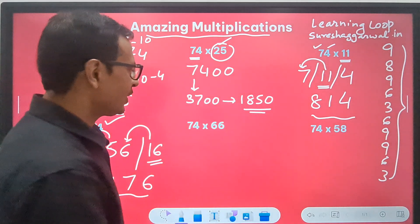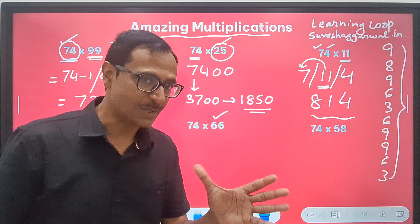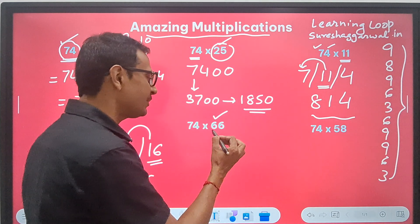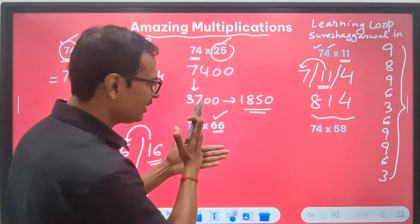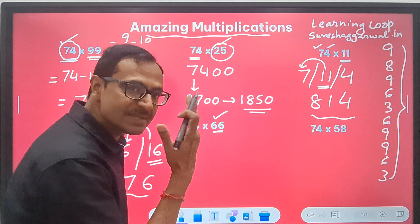Likewise, if you are multiplying it by a special number 66. Now, why I call 66 as a special number? Because it has some relation with 74. Can you see the number in the middle here? 74 and 66? The number in the middle is 70.